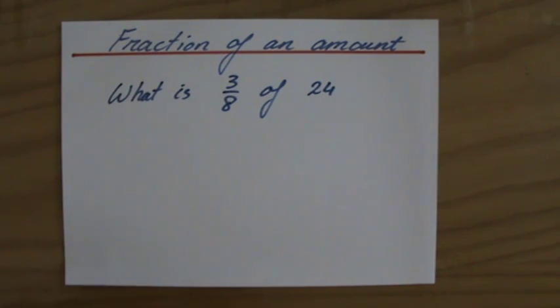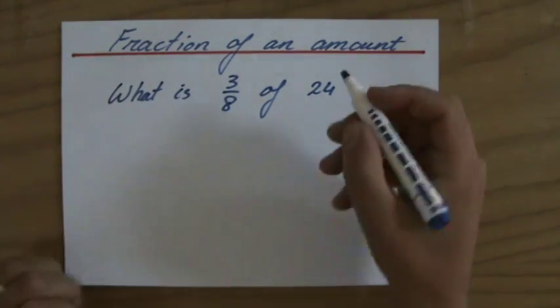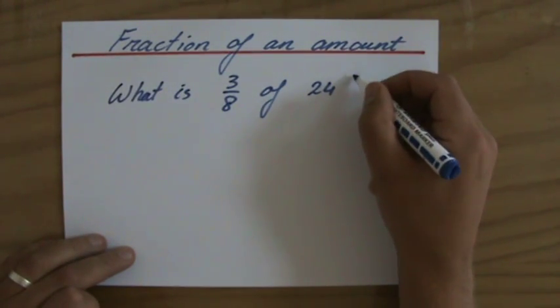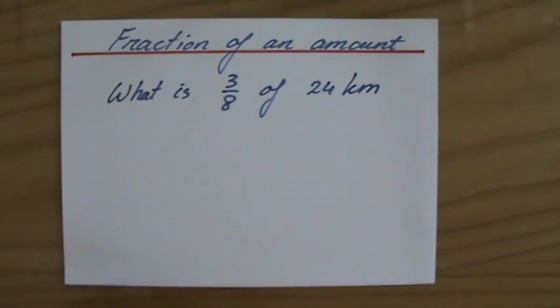They can disguise questions like this in all sorts of word problems. For instance, what is 3 eighths of 24 kilometers? So they have this word problem around it.